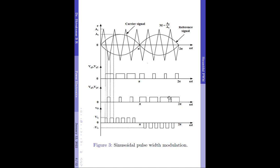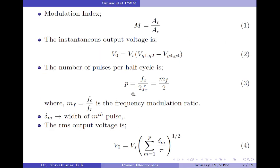Similar to how we defined the number of pulses per half cycle in multiple pulse width modulation, we use the same formula here. The number of pulses P equals FC divided by 2FR. The ratio of FC to FR is called the frequency modulation ratio, denoted by MF. Therefore, the number of pulses can also be defined as MF divided by 2. If we denote δM to be the width of the Mth pulse, then the output RMS voltage is given by: V0 equals VS multiplied by the square root of the summation (M varying from 1 to P) of δM divided by π.